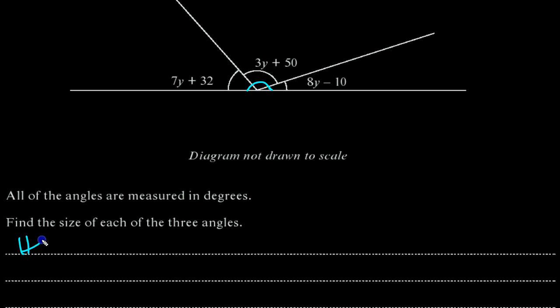So here, 7y plus 32 plus 3y plus 50 plus 8y minus 10. When we add them all up, they must all add up to 180 degrees.